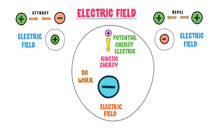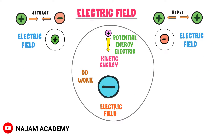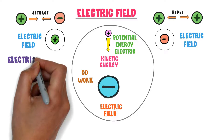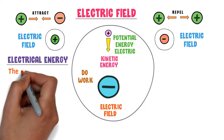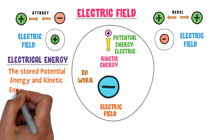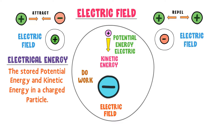From this example, we learn that a point charge possesses electric potential energy as stored potential energy, as well as kinetic energy. The combination of stored potential energy and kinetic energy in a charged particle is called electrical energy.